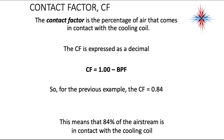The contact factor is the percentage of air that comes in contact with the cooling coil — basically the opposite of the bypass factor, also expressed as a decimal. To get the contact factor, you take 1.00 minus the bypass factor. In this example, we had a bypass factor of 0.16, so 1.0 minus 0.16 gives us a contact factor of 0.84. That means 84% of the airstream is actually coming in contact with the cooling coil.